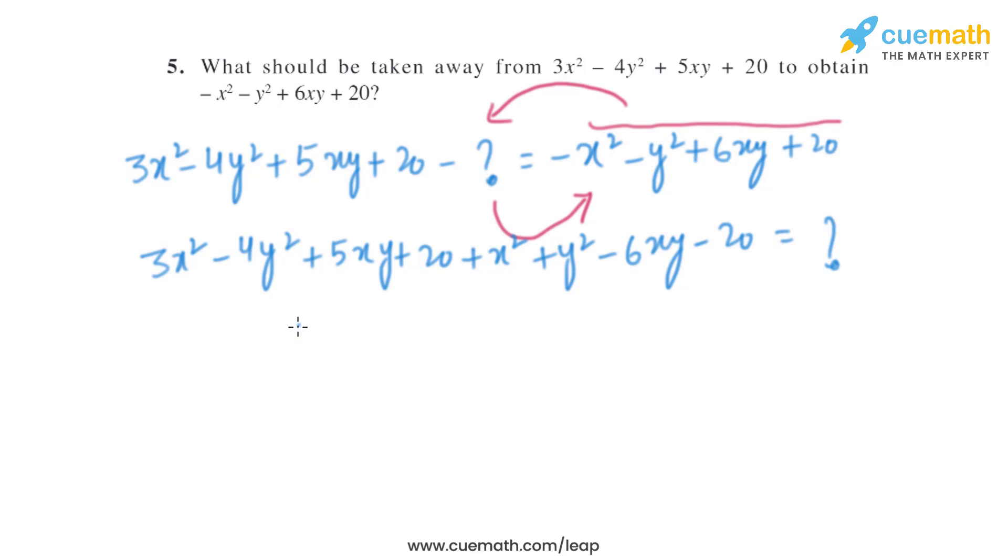So when we add the like terms, 3x² + x² will give us 4x², and -4y² + y² will give us -3y², and 5xy - 6xy will give us -xy.